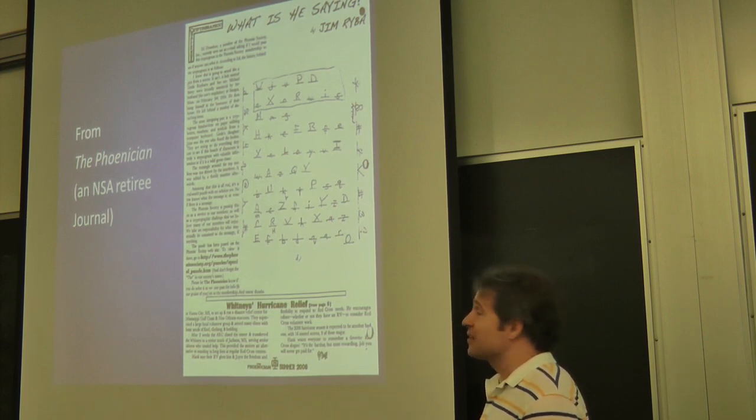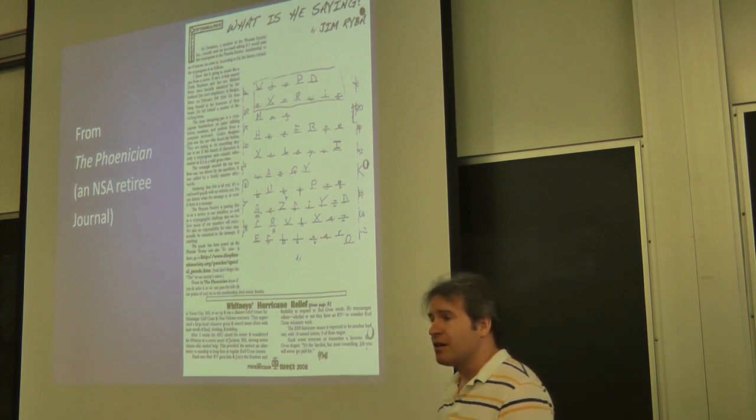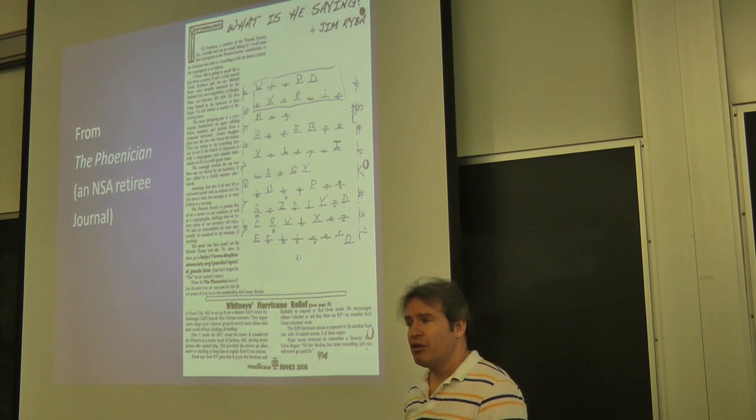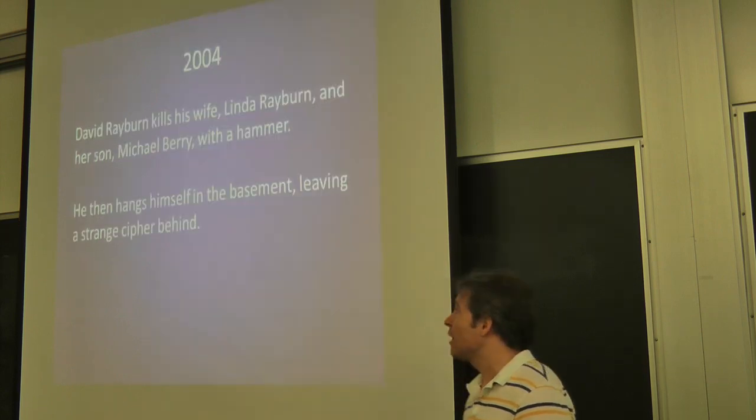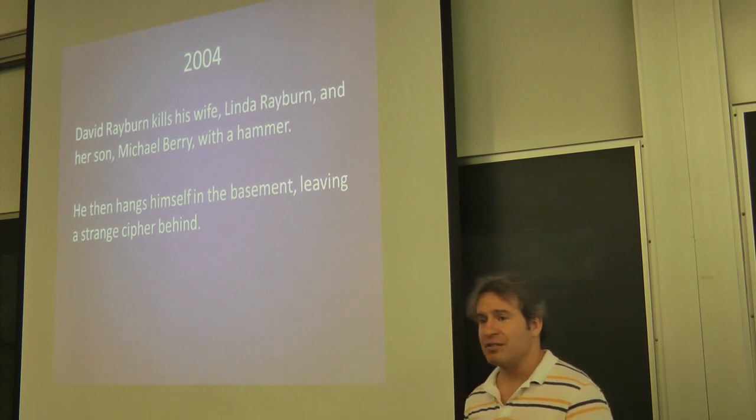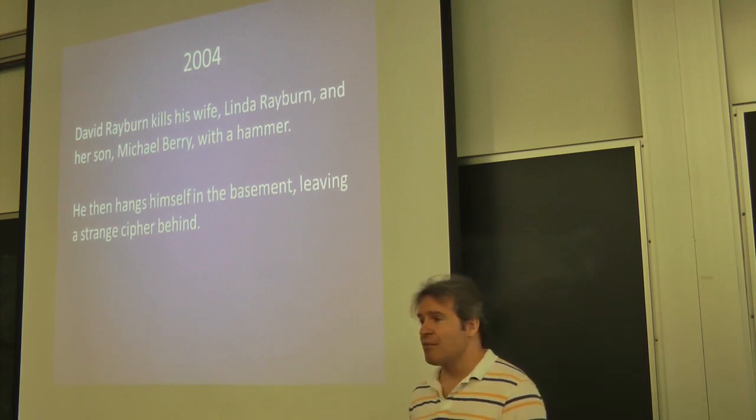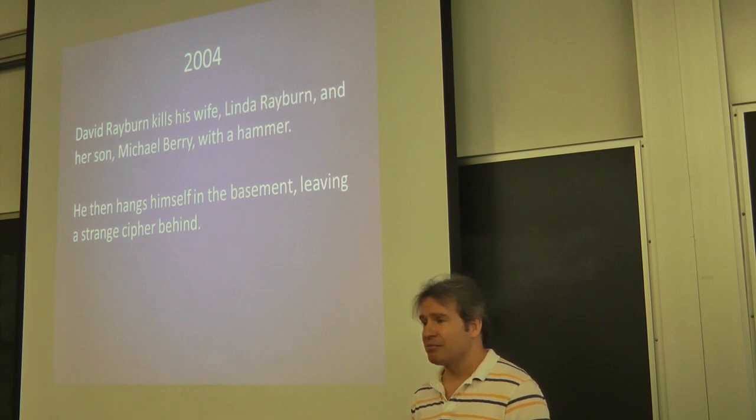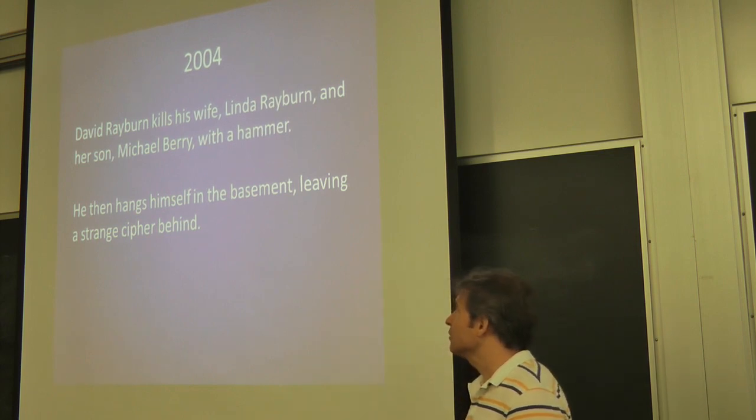Now, some family member added that box afterward. But let me tell you the story here. Now, I passed some peer review to get mentioned here, although nobody seems to be certain if this is a hoax or not. There's so much murder in this presentation. David Rayburn takes a hammer, kills his wife and stepson. Goes in the basement, hangs himself. And then upstairs, the cipher message is found. Let's take a closer look.